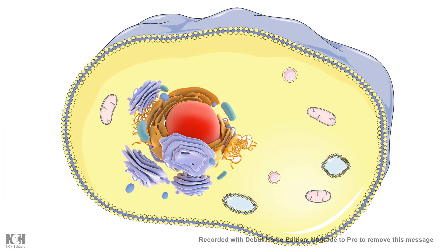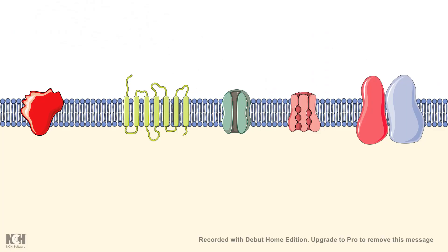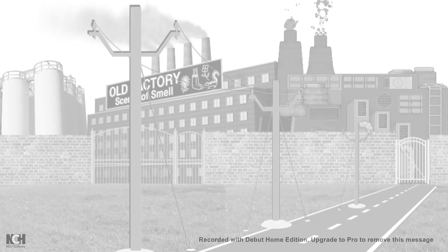If you consider an animal cell to be a factory, then the plasma membrane of the cell is just like the boundary wall of the factory.